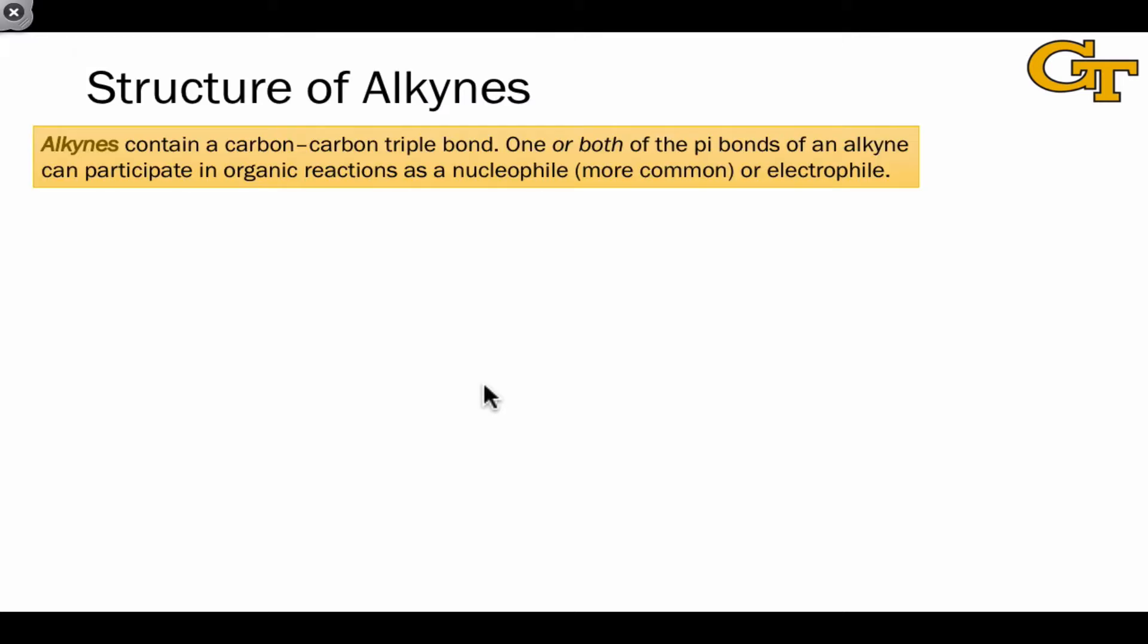The alkyne is a functional group containing a carbon-carbon triple bond, and we make this important distinction between a terminal alkyne, in which the carbon-carbon triple bond is positioned at the end of a carbon chain, leaving us with a CH group on the end, and an internal alkyne, in which the triple bond is positioned between two R groups.